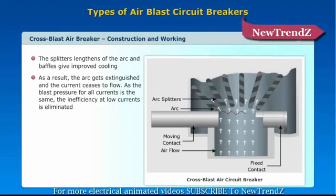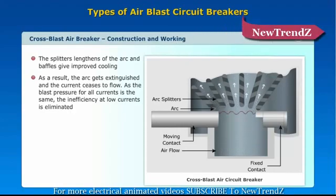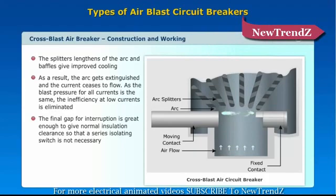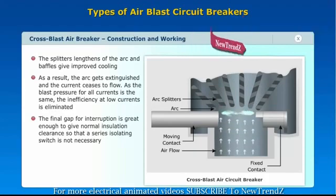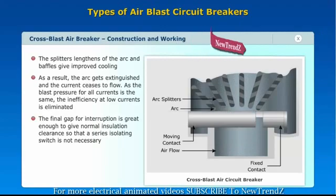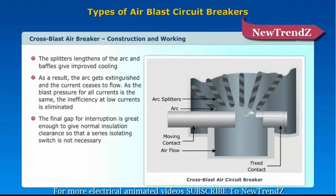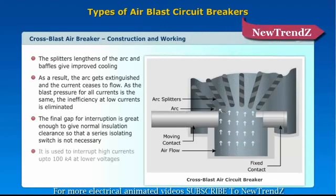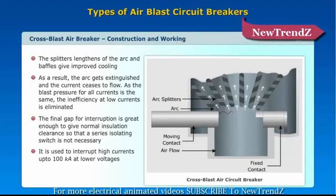As a result, the arc gets extinguished and the current ceases to flow. As the blast pressure for all currents is the same, inefficiency at low currents is eliminated. The final gap for interruption is great enough to give normal insulation clearance, so that a series isolating switch is not necessary. It is used to interrupt high currents up to 100 kA at lower voltages.